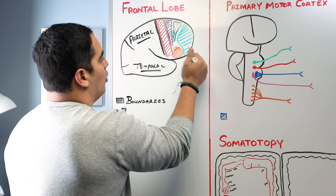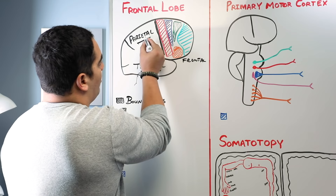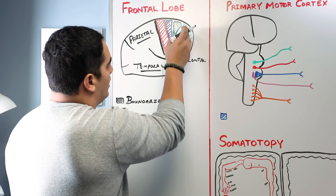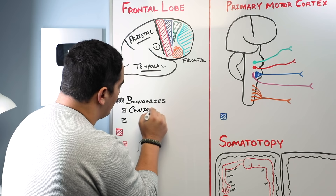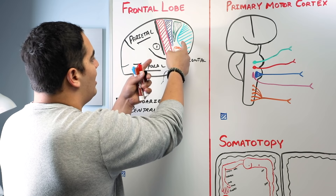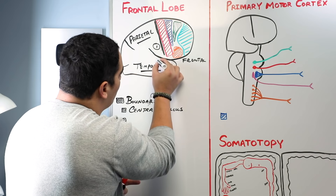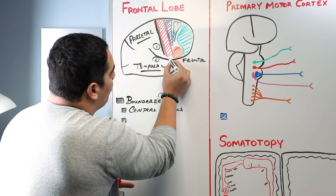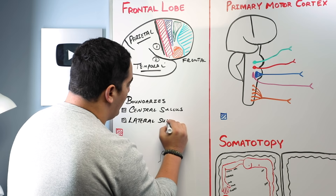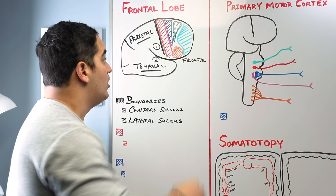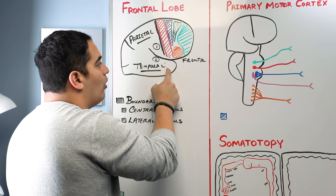The frontal lobe is separated from the parietal lobe by this black line — this sulcus is called the central sulcus. That basically forms the boundary separating the frontal lobe from the parietal lobe. The second boundary is the sulcus that runs between the frontal lobe and the temporal lobe, called the lateral sulcus, or sometimes the Sylvian fissure. So the frontal lobe is separated from parietal by the central sulcus and from temporal by the lateral sulcus.